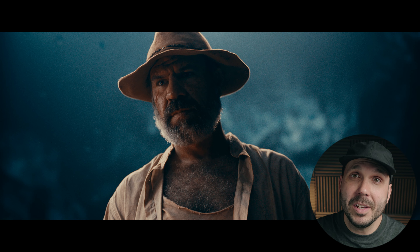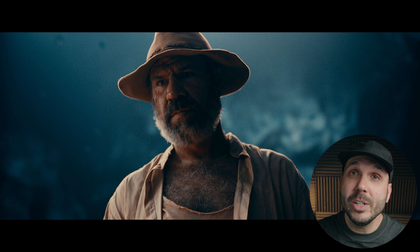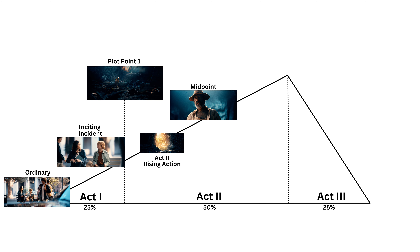Let's pause here to discuss ingredient five, known in screenwriting terms as the midpoint. What you want in a good midpoint is the stakes to be raised significantly, and in our case, we're meeting a clear antagonist. As the name suggests, the midpoint should show up right in the middle of your film. We're at 48% of the way through, which is right on time.